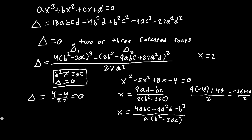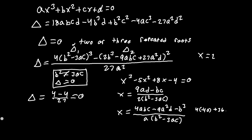For the simple root, plugging in a=1, b=-5, c=8, d=-4: we get 4(40) - (-5)(-4)(9) - (-125) = -160 + (-36) + 125... simplifying gives 1. So x = 1 is the distinct root.